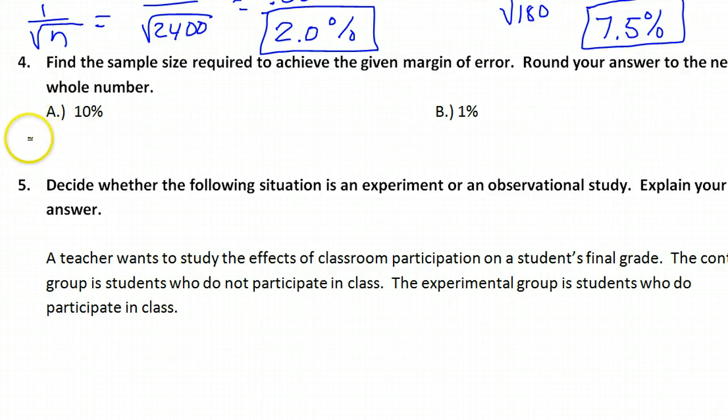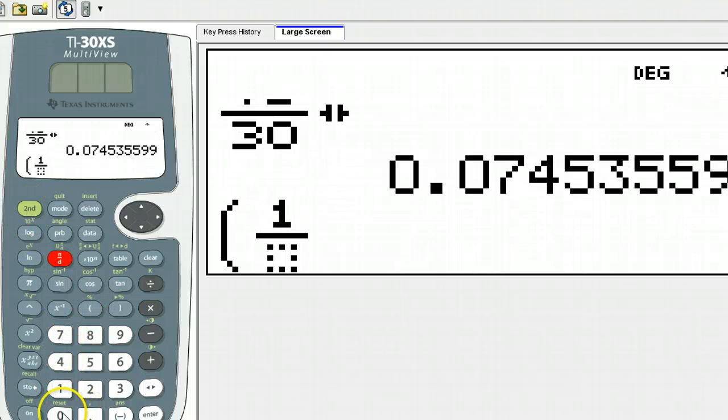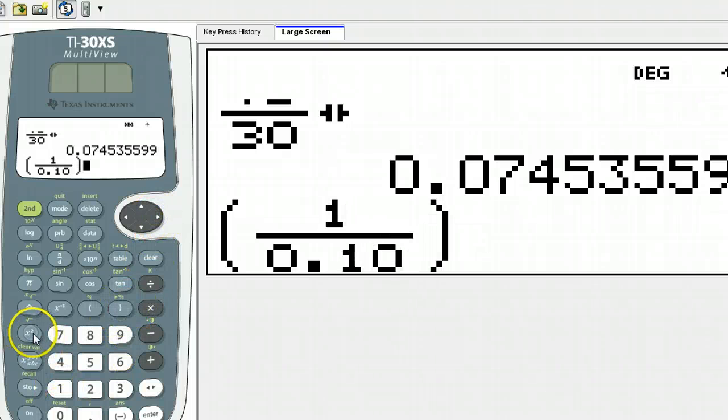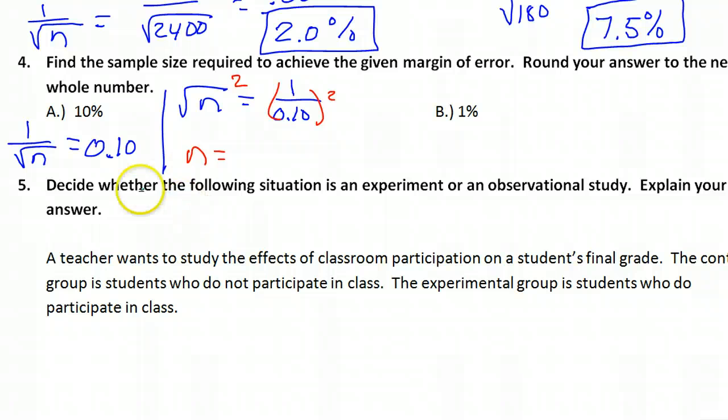If I want a margin of error of 10 percent, that means 1 over the square root of my sample size equals 0.10. That's 10 percent. Doing the reciprocal of both of these gives me square root of n equals 1 over 0.10. Then I need to square both sides. This will give me n equals 100.